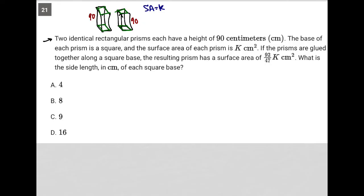So let me just draw, if I were to combine both prisms together we'd have a longer prism. What else would change? Instead of a height of 90 it would become a height of 180. And the question tells us that our surface area now would be 92 over 47 times k. Okay, so what is the side length in centimeters of each square base?